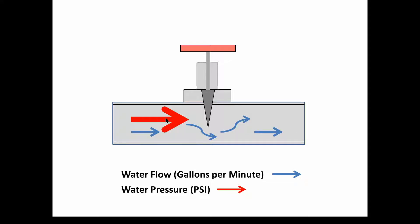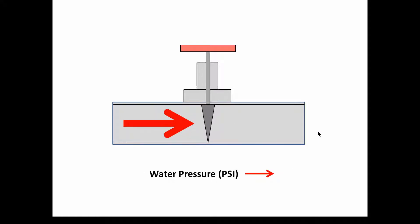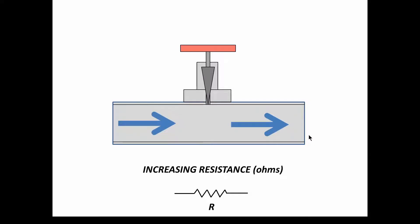What's increasing as the valve closes is the pressure. You've got a lot of water trying to get out through a small hole, so the pressure builds up — kind of like a lot of people trying to get through a small door. When you completely close the valve, there's no water flow but a lot of pressure. The water being pushed through the pipe can't get anywhere, so pressure builds up. This is very analogous in the electrical world to what's called resistance.